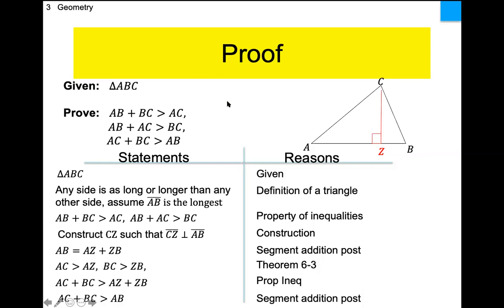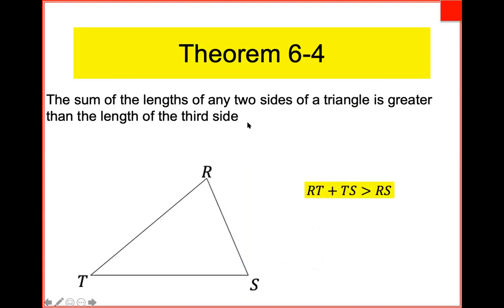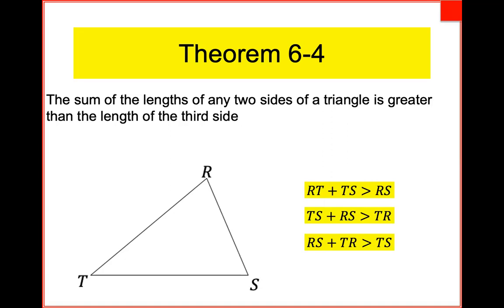The right side, AZ plus ZB, equals AB by the segment addition postulate. So BC plus AC is greater than AB — we're done. We just proved Theorem 6.4: for any triangle, any two sides added together are always bigger than the third side. The little diagram is more intuitive but we can't accept a drawing as a formal proof.